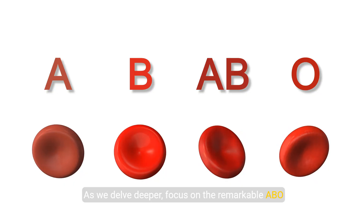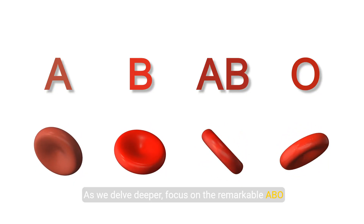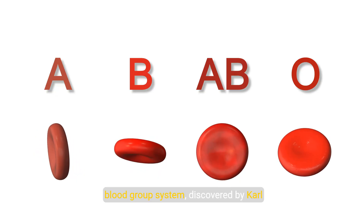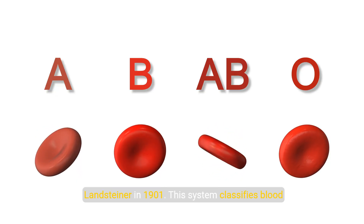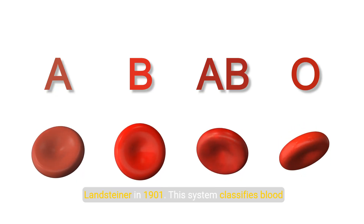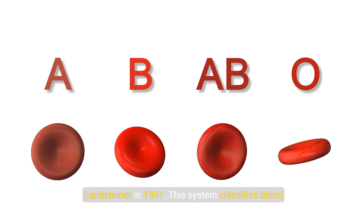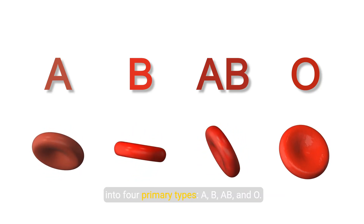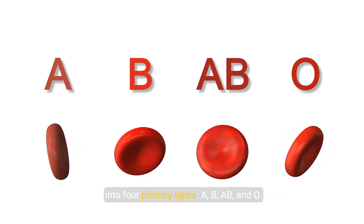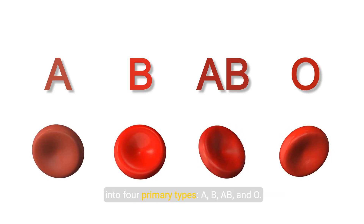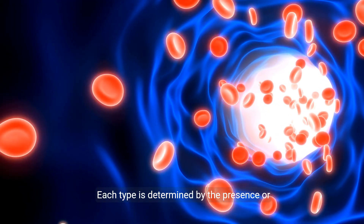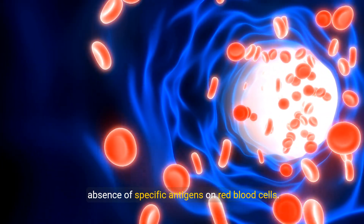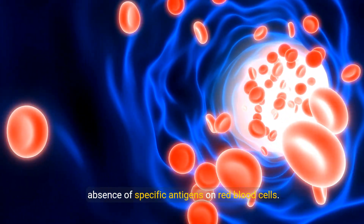As we delve deeper, focus on the remarkable ABO blood group system, discovered by Carl Landsteiner in 1901. This system classifies blood into four primary types — A, B, AB, and O — each determined by the presence or absence of specific antigens on red blood cells.